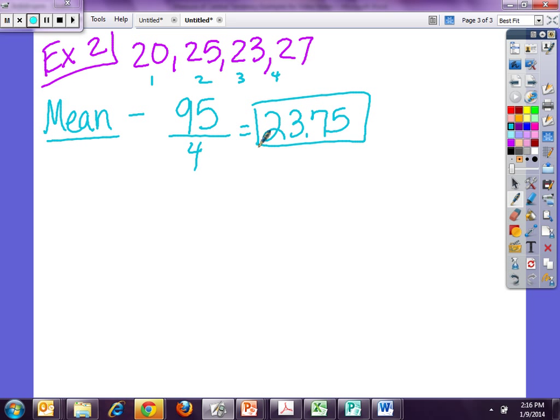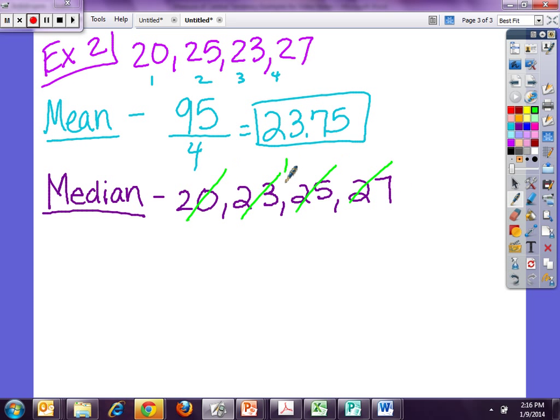Now I do my median. My median is the middle. So I order them 20, 23, 25, 27. Now here's where things get tricky. If I count in, I get to the middle, and I don't have anything. So I have to determine what number falls between, or directly in between, 23 and 25. In order to do that, I find the mean of those two numbers. I add those two together, 23 plus 25, which gives me 48. And then I divide that by 2, which gives you 24.